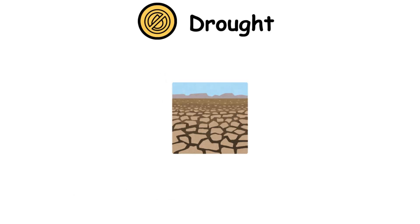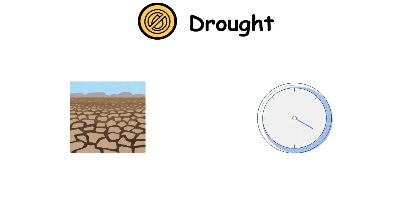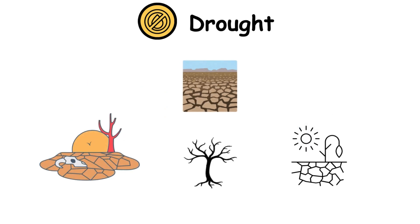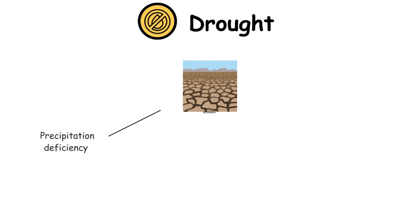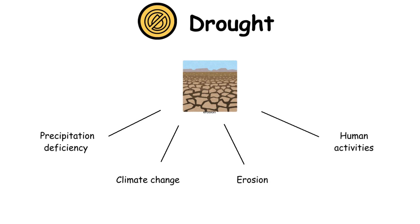A drought is a period when it is drier than normal conditions. The duration of a drought varies — it can last for days, months, or years. Drought affects the ecosystems and agriculture in the affected regions. The causes of drought include precipitation deficiency, dry season, climate change, erosion, and human activities.